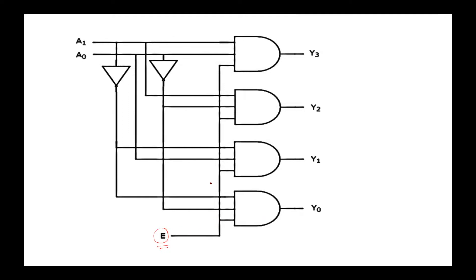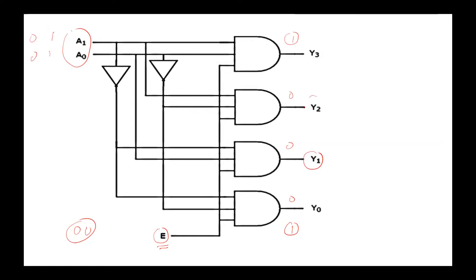If E is one, the output depends on the states of A0 and A1. For example, if we have A1=1 and A0=1, then only Y3 will be one and all other outputs will be zeros. If we have A1=0 and A0=0, then Y0 will be one. If A1=0 and A0=1, then Y1 will be one. If A1=1 and A0=0, then Y2 will be one. And if A1=1 and A0=1, we will have one on Y3.